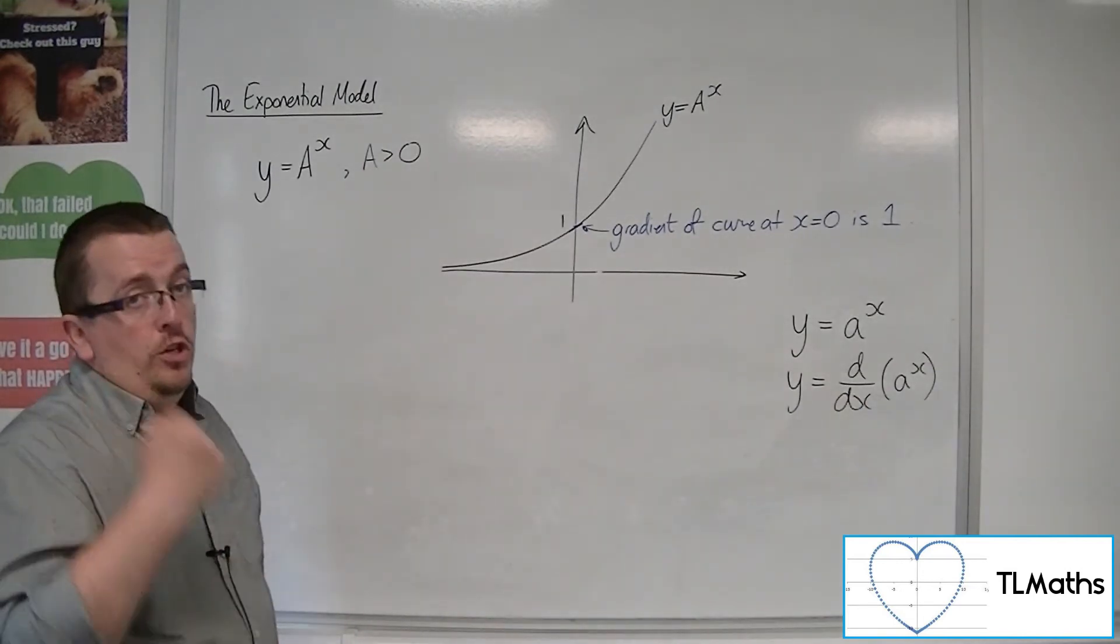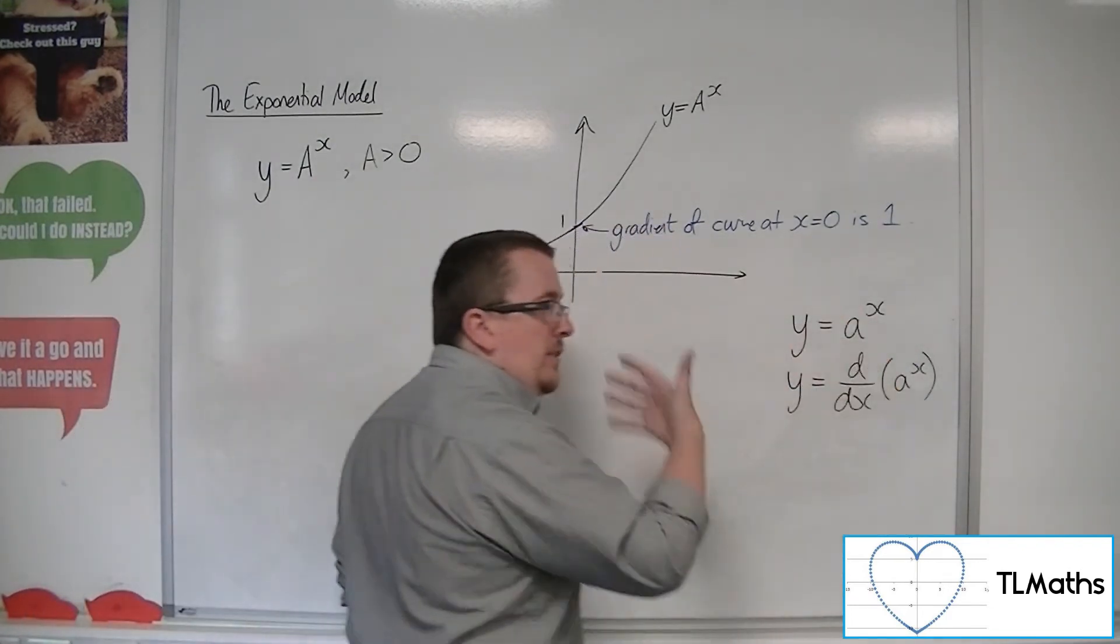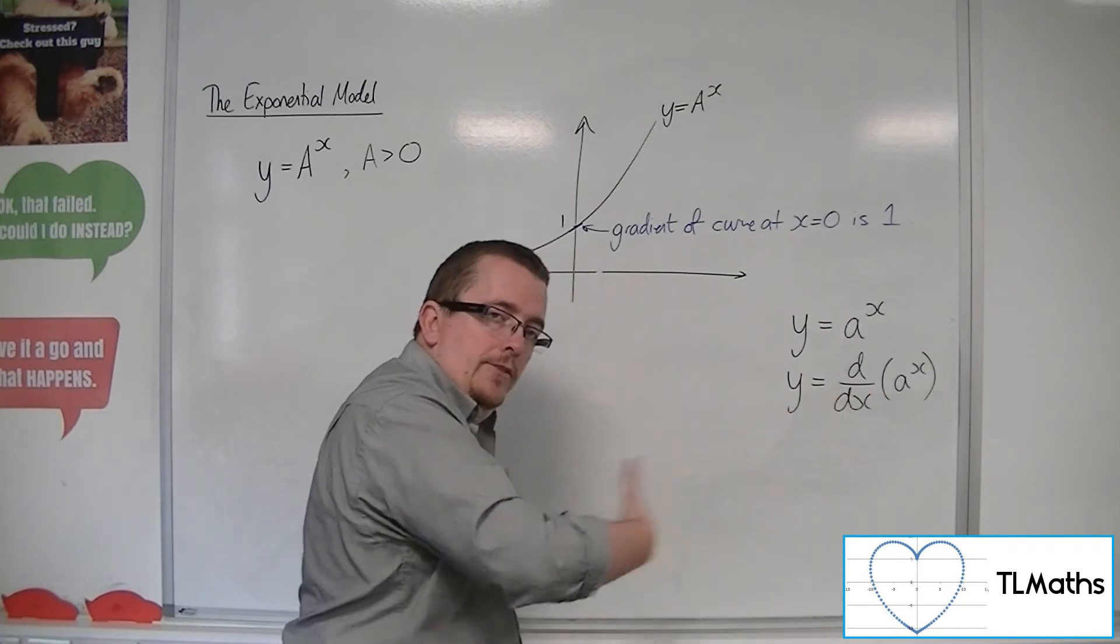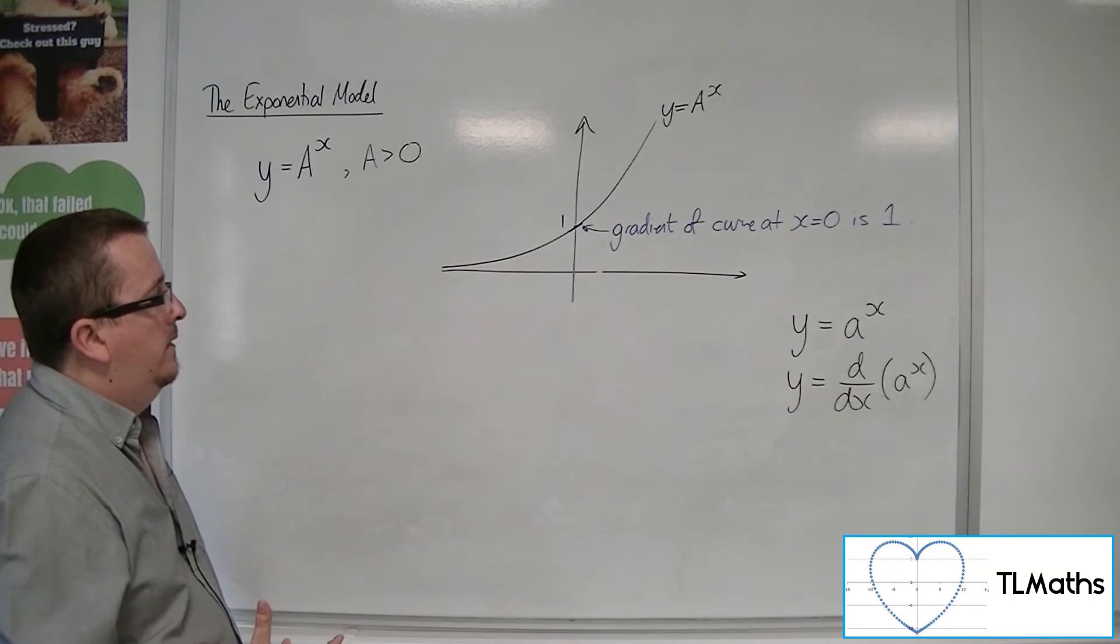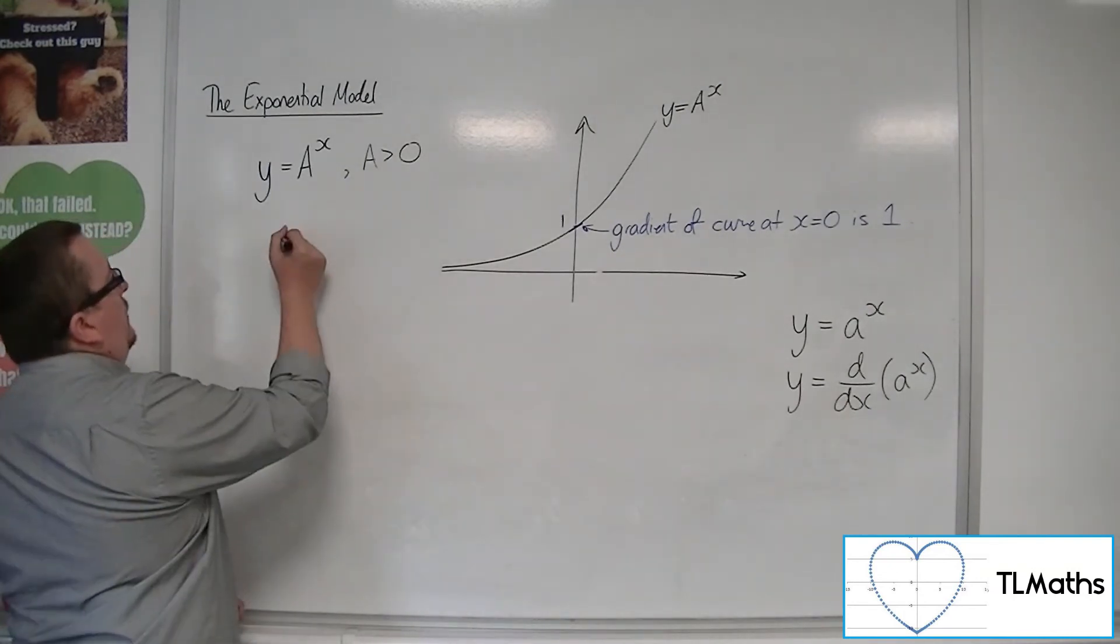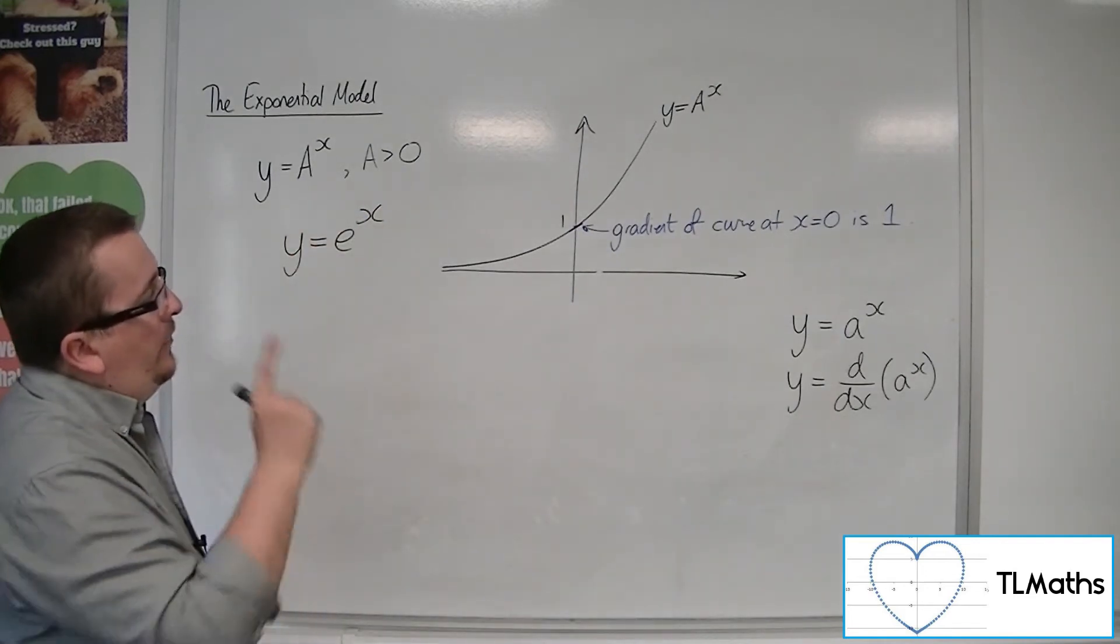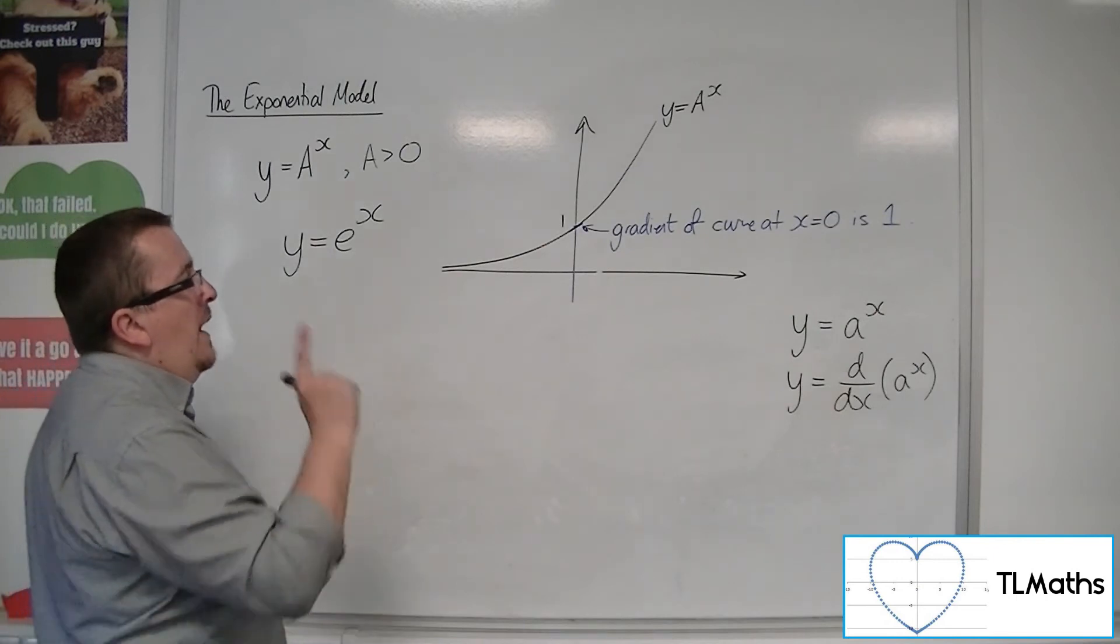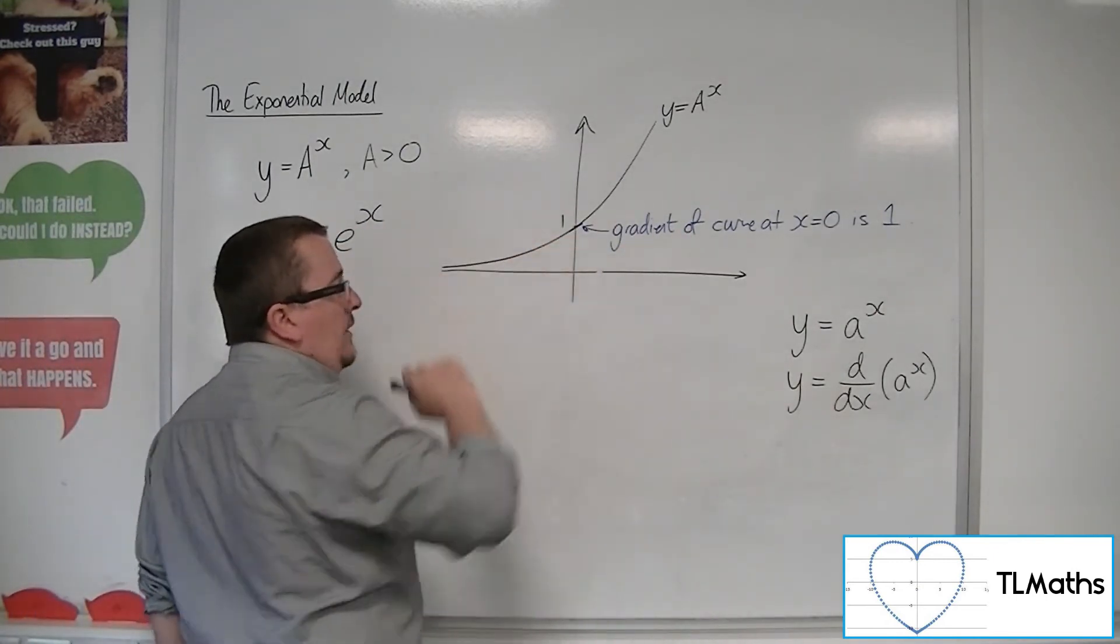And what you should find is that this works for a being 2.7 and so on, right? When a is e, the number e. So what you actually find is that y equals e to the x is a function that has a gradient of 1 when x is 0.